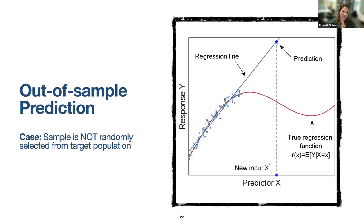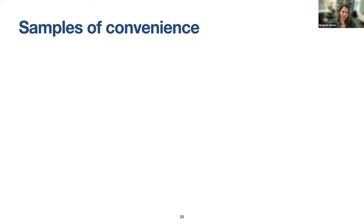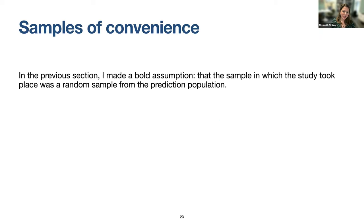Now I want to move to out-of-sample prediction, where the sample is not randomly selected from the population. In the previous section I made the bold assumption that the sample is a random sample from the prediction population — which very rarely happens.